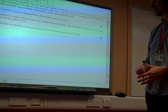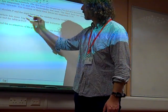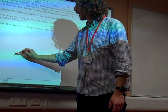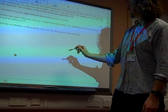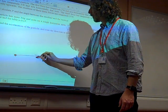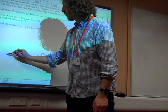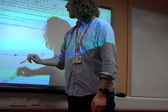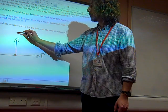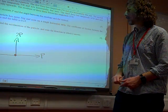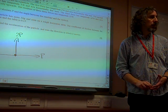I feel the need for a diagram. So three forces acting on a particle. Here's my particle. P is acting due east, there's P. The second force, 5 newtons, is horizontally due west. The third force has magnitude 2P and acts vertically upwards.